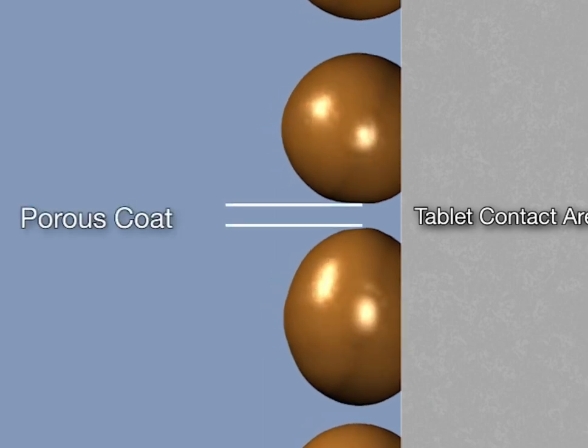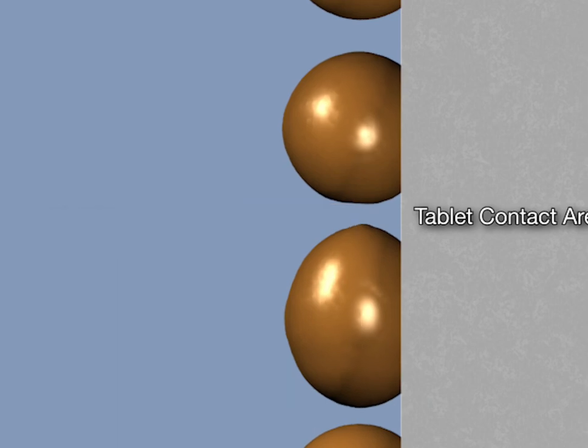If the evaporation rate is too high, the polymer chains have insufficient time to settle completely over the tablet contact area and will produce a porous coat.